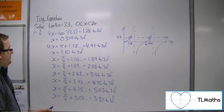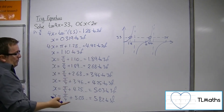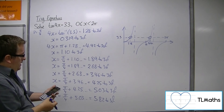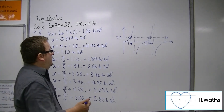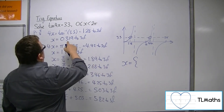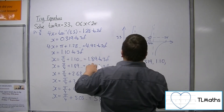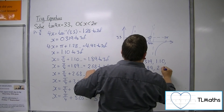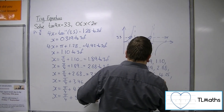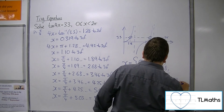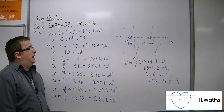These are your eight solutions. If I added pi over 4 on again, I would go past 2 pi, which is 6.28. So the eight solutions are 0.319, 1.10, 1.89, 2.68, 3.46, 4.25, 5.03, and 5.82. These are the eight solutions to the problem tan 4x equals 3.3 between 0 and 2 pi.